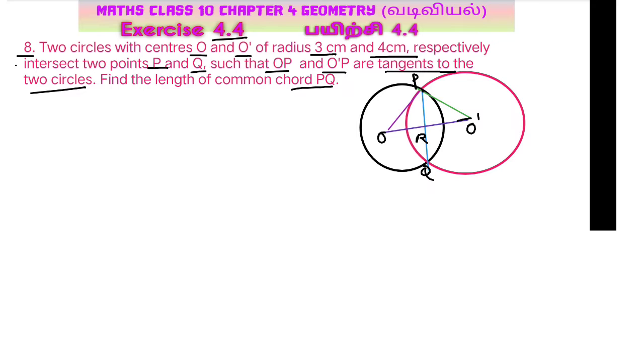We have to look at OP and O'P are tangents and also OP and O'P are radius of this small circle. So this is 3 cm and this is 4 cm.